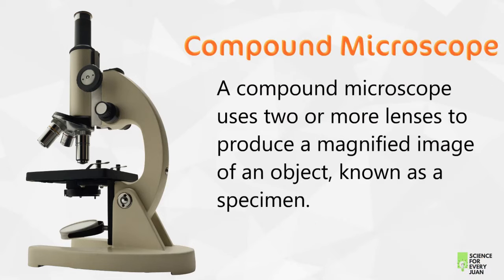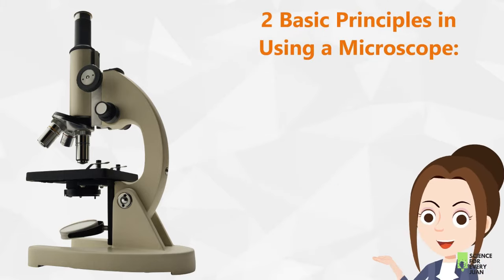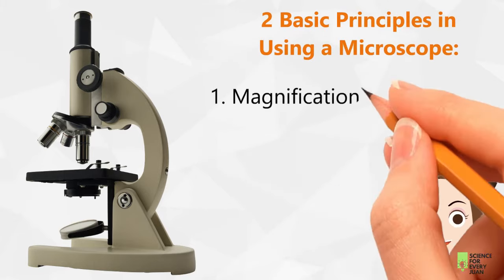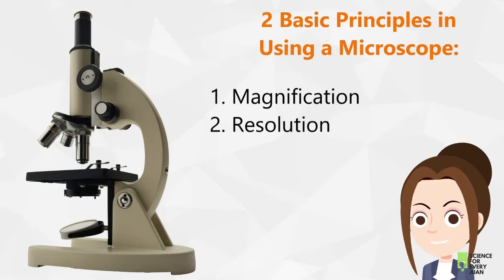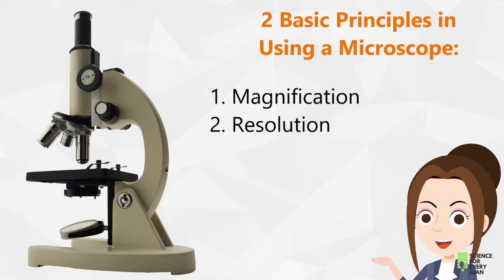A compound microscope is a type of microscope that uses two or more lenses to produce a magnified image of an object known as a specimen — hence the name compound. There are two basic principles in using a microscope: the first one is magnification, and the next one is resolution.